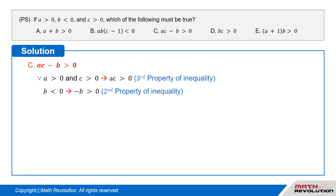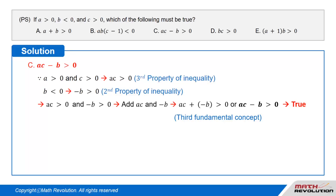Option C: A times C minus B is greater than 0. Since A is greater than 0 and C is greater than 0, then A times C is greater than 0 by the third property of inequality. Also, B is less than 0, which when multiplied by negative 1 gives negative B is greater than 0, according to the second property of inequality. Hence, when you add two positive quantities — A times C and negative B — the result will be positive. Therefore, A times C plus negative B is greater than 0, or A times C minus B is greater than 0, by the third fundamental concept. Hence, this option is true.